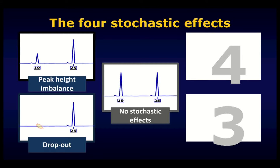An extreme example of peak height imbalance constitutes the second kind of stochastic effect: the phenomenon known as allelic dropout. Here, not only is there an imbalance in the height of the 19 and the 25, but the 19 has failed to be detected altogether. What had begun as a sample from a heterozygous individual with two different alleles at this locus now appears, for all intents and purposes, to have come from a homozygote — somebody with two copies of the 25 allele, with no indication that there was another allele there at all.